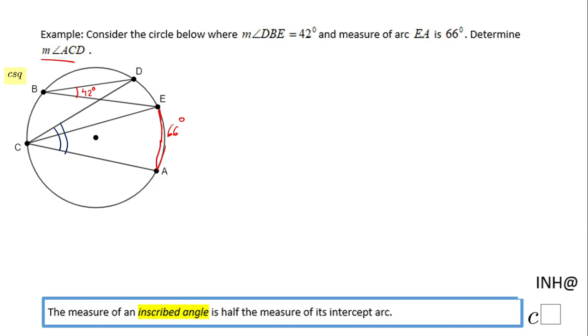For that reason, I'm going to use this property of an inscribed angle, which says the measure of an inscribed angle is half the measure of its intercept arc. So basically, for the measure of angle ACD, I'm going to look at its intercept arc, which is arc AD, and I will divide that by two.